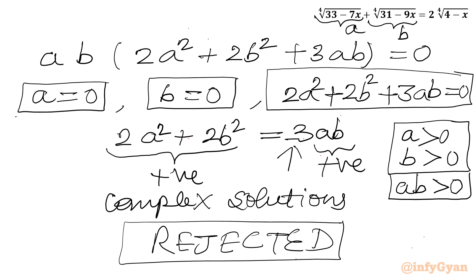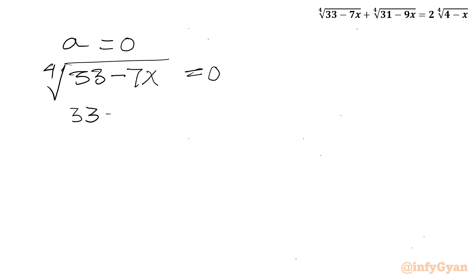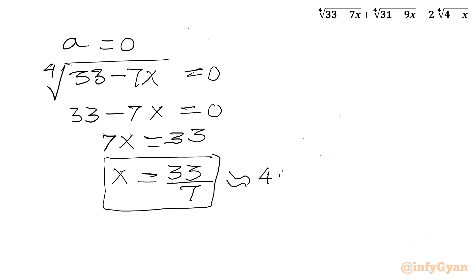Now solving a equals 0: 4th root of (33 minus 7x) equals 0. Raising both sides to the power 4 gives 33 minus 7x equals 0, so 7x equals 33, and x equals 33 over 7. This is our first candidate solution, approximately 4.714.